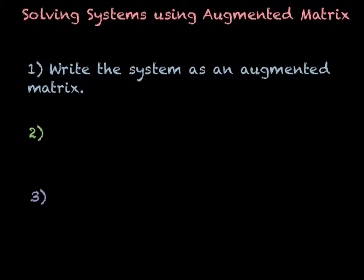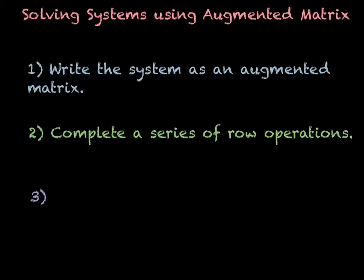The second step is to complete a series of row operations. What this means is you can multiply any row by a scalar and add it to a row and make it the new row. Or you can just multiply and then make that the new row. Or we can completely switch rows around. We'll do a couple examples to show you what this is all about.